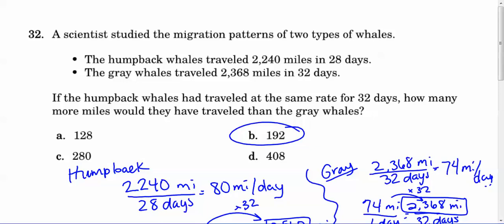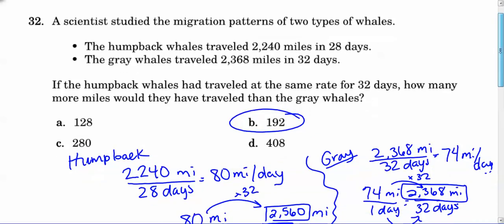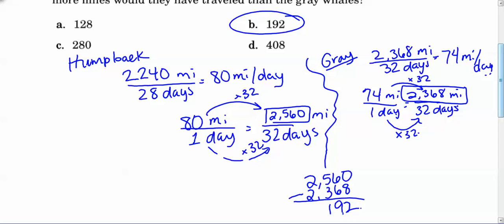So the first step is to figure out how far they travel per day. So I have to work for the humpback whale here on the left hand side of the screen. And that was 2,240 miles. And that's over the course of 28 days. When you divide those two quantities, that's going to give you how many miles per day when you put your miles on top and the days on the bottom. That's 80 miles per day, right? So with the gray whale, if you look to the right hand side of the screen, I do the same process. 2,368 miles over the course of 32 days. That means that guy is traveling 74 miles per day. All right. So obviously the humpback whale is a little faster than this gray whale.